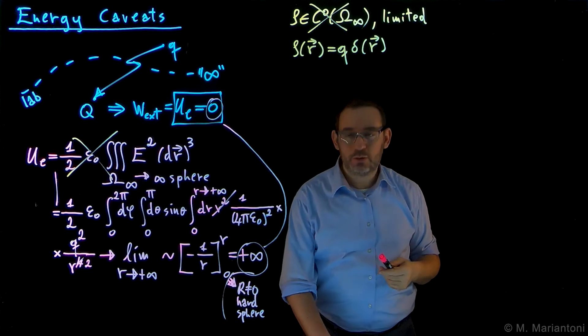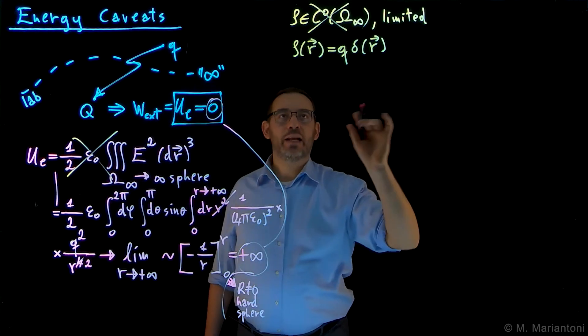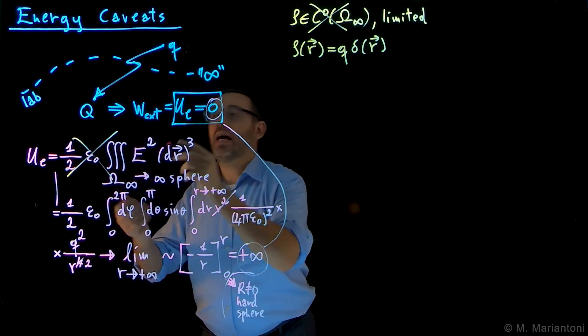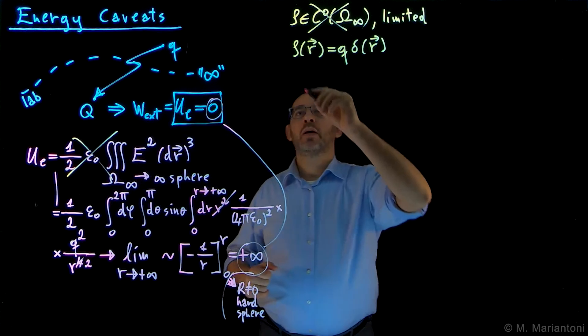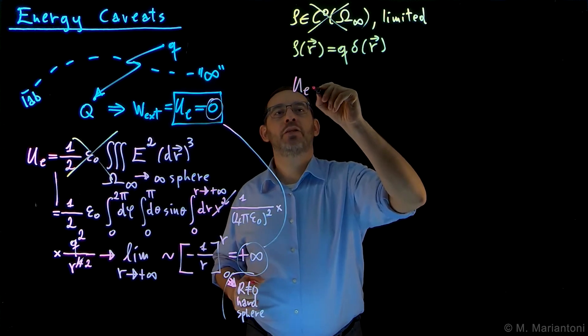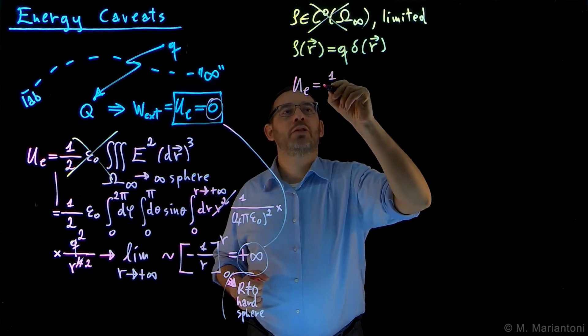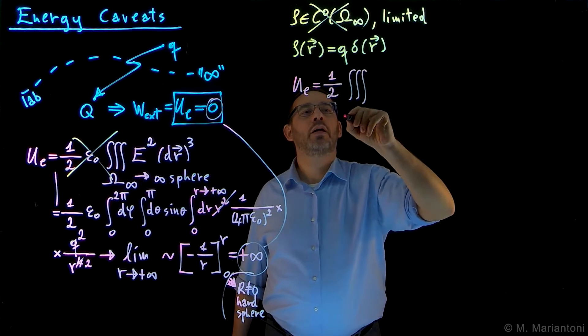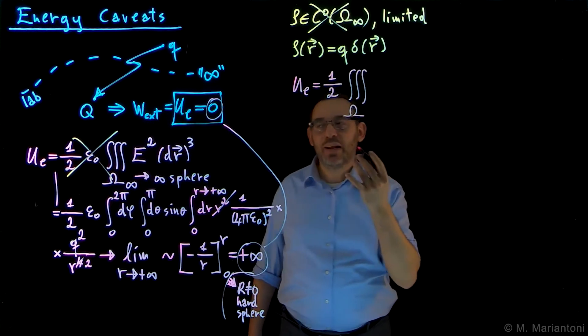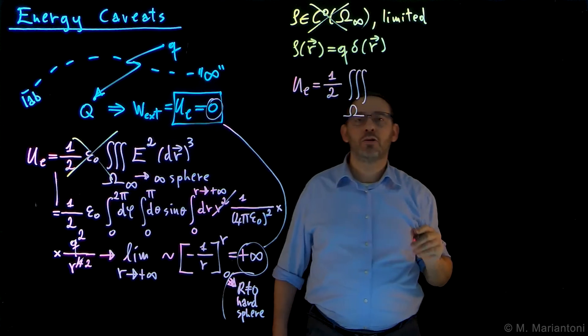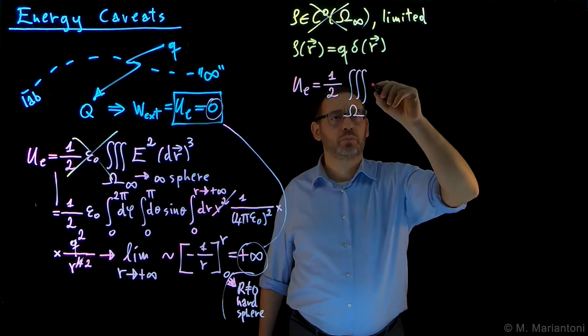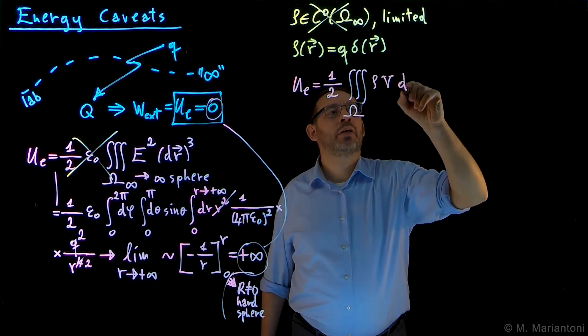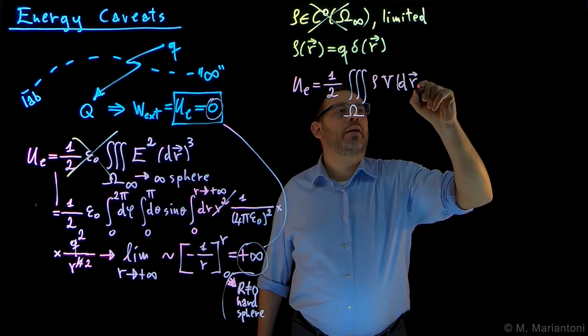Instead, what we should have done is to use the usual general equation, which is the one we studied from in order to derive this after imposing that condition. So the way to proceed is to write Ue as 1/2 with the total generic expression, volume integral on a region omega, which at the very least has to contain the particle—it could be the particle itself in this case—of Rho times the electrostatic potential times the element dRQ cubed.